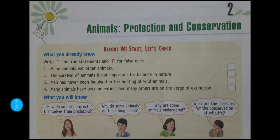Good afternoon children. Today in EVS we are going to move on with Chapter 2: Animals Protection and Conservation. We have already discussed a few topics of this chapter, and the last topic we discussed was armor. Armor — God has given every human being, every living being, some special quality in their body structure to defend and protect themselves from predators and enemies.